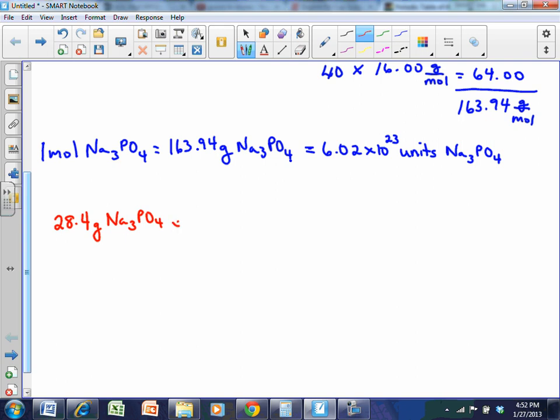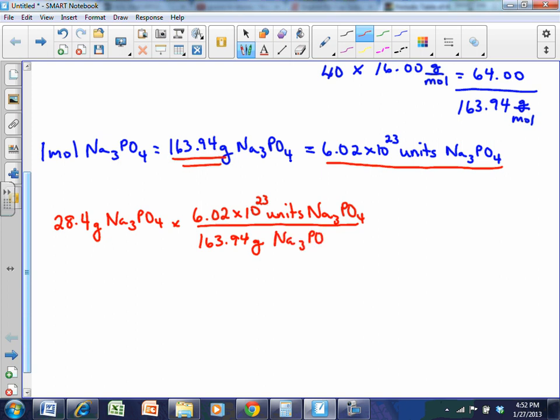And I know that there are 6.02 times 10 to the 23rd units or molecules per every 163.94 grams of that substance. So that first step just counts up the total number of formula units of Na3PO4. All it's doing is counting up how many molecules or formula units of Na3PO4 there are.